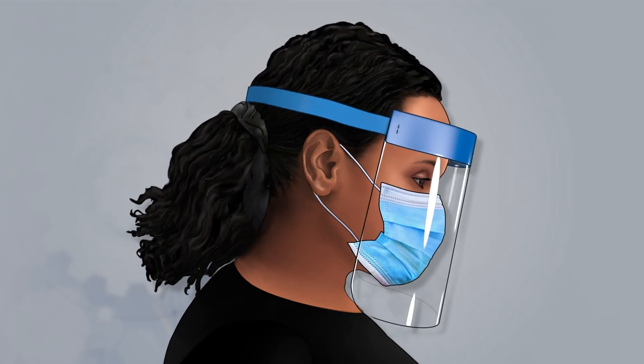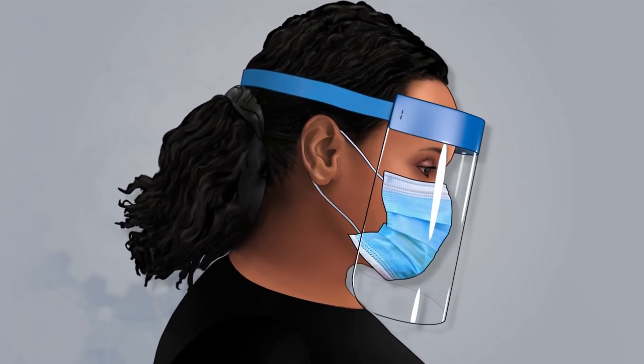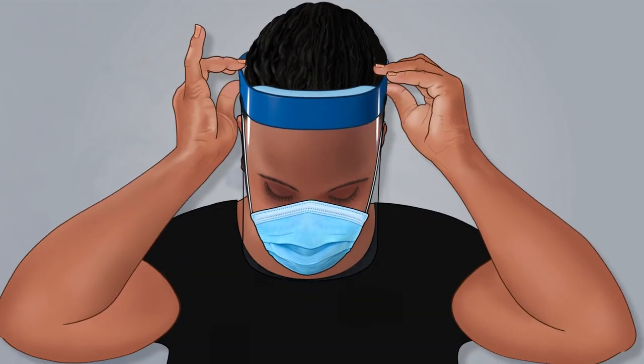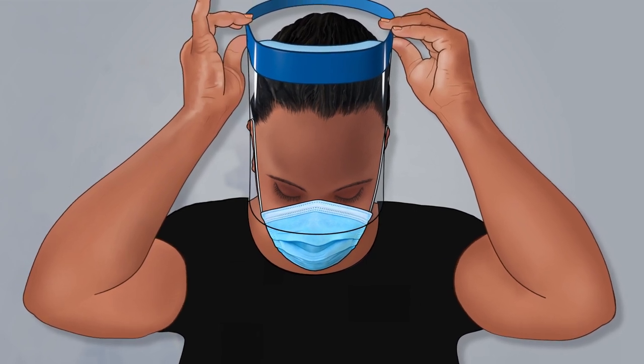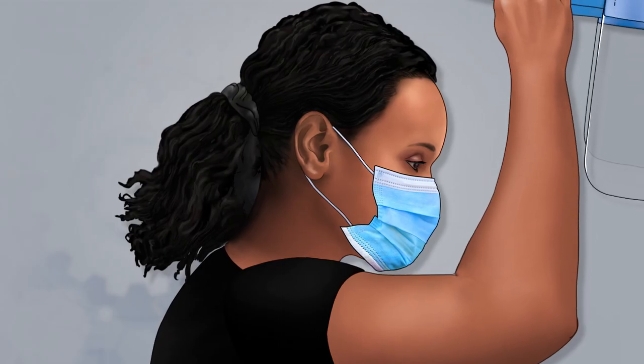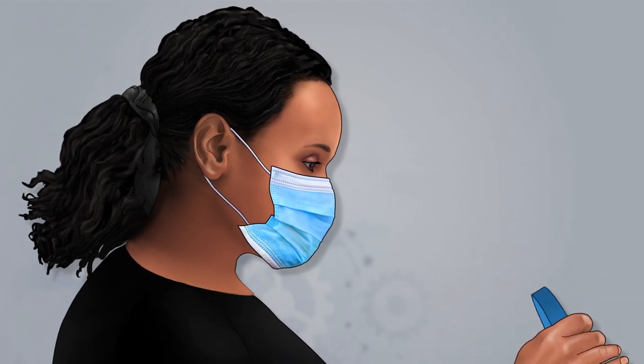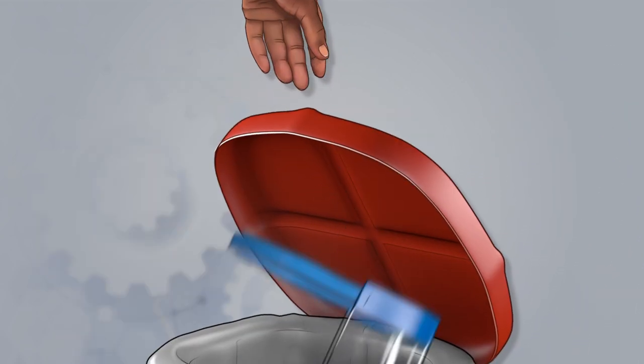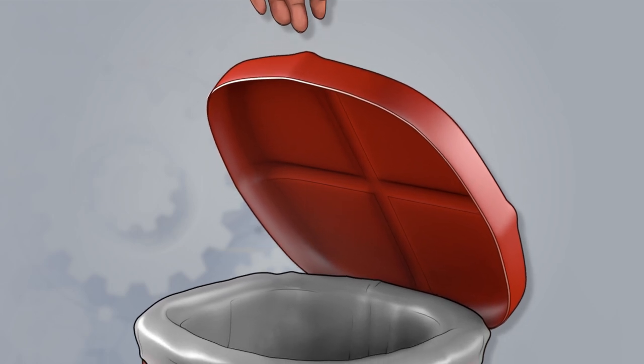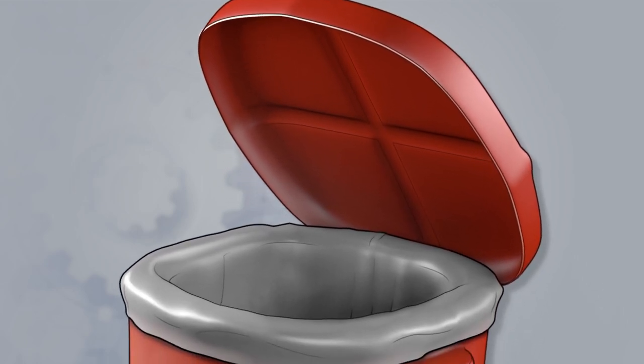Tilt your head slightly forward to take off your face shield. Grasp the straps above the ears and gently lift the face shield away from your face, taking care to avoid touching the shield itself which may be potentially contaminated. Then, discard the disposable face shield in the biohazard waste container.